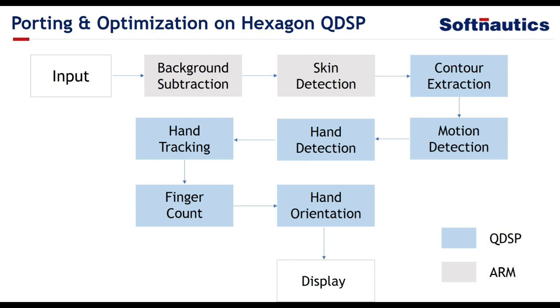We developed the hand gesture library on PC and later it was ported and optimized for the Snapdragon platform. In doing so, we split our library algorithms between ARM and Hexagon QDSP core such that it consumes less power overall. Since FastCV is an optimized computer vision library from Qualcomm, we replaced many OpenCV calls with FastCV APIs.